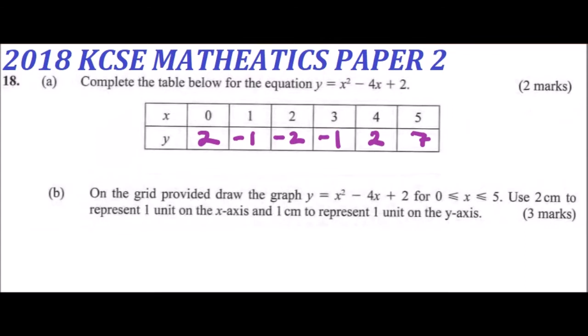The second part of the question is, you are provided with a grid. You draw the function y is equal to x squared minus 4x plus 2, for 0 less than or equal to x less than or equal to 5. You are instructed to use 2 centimeters to represent 1 unit on the x-axis, and 1 centimeter to represent 1 unit on the y-axis.